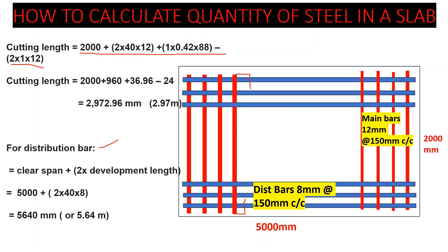For the distribution bar, the cutting length formula is: clear span plus 2 times the development length (Ld = 40d), where the diameter is 8 millimeters. So it is 5000 plus 2 times 40 times 8, which gives a cutting length of 5640 millimeters, or 5.64 meters. The bar runs along the span and bends at each end.